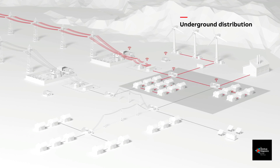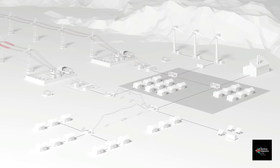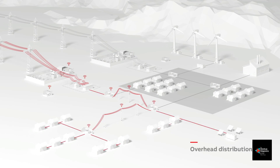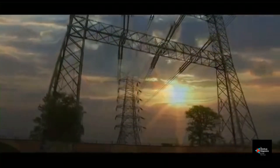Underground distribution substations are also located near the end users. Their transformers change the sub-transmission voltage to lower levels for use by end users — for example, power received at 33 kV or 11 kV is stepped down to 415 volts, which can be used for domestic appliances.